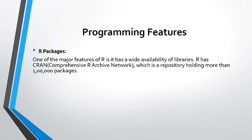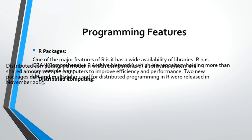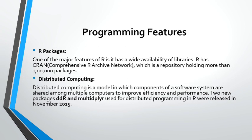You can search for CRAN — Comprehensive R Archive Network — and find all the packages there, and you can also download the R software from that website. Distributed computing is a model in which components of a software system are shared among multiple computers to improve efficiency and performance. Two new packages, ddR and multidplyr, were released in November 2015 for distributed programming in R, and these two packages are most efficient for performance across multiple computers.